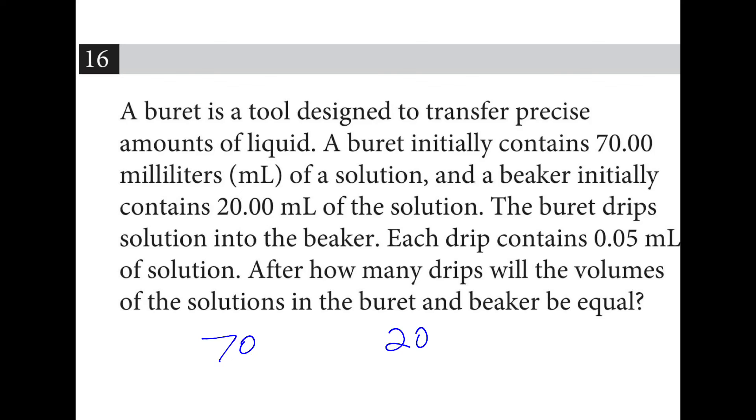So we have two containers: one has 70, one has 20. And every time it drips, we send 0.05 this way. So if you think about that, this goes down by 0.05 and this one goes up by 0.05. So the initial difference between the two containers is 50 milliliters, and the change for every drip, if you include the decrease and the increase, is 0.1. So 500 drips, because we take 50 divided by 0.1. 10 drips is a milliliter times 50.